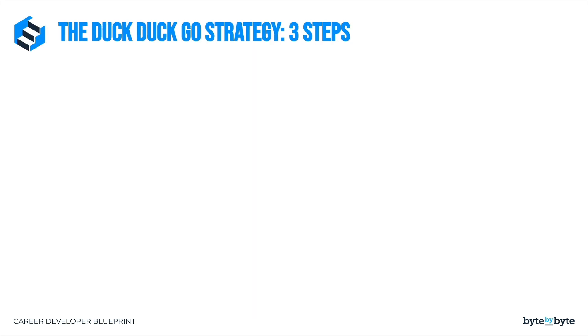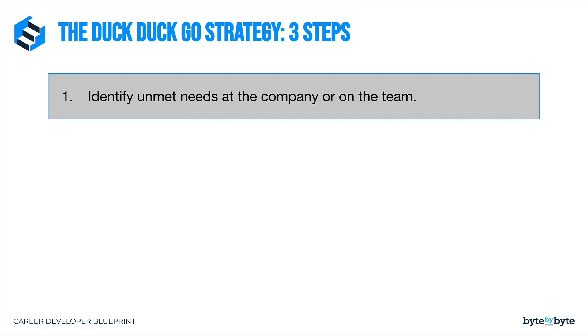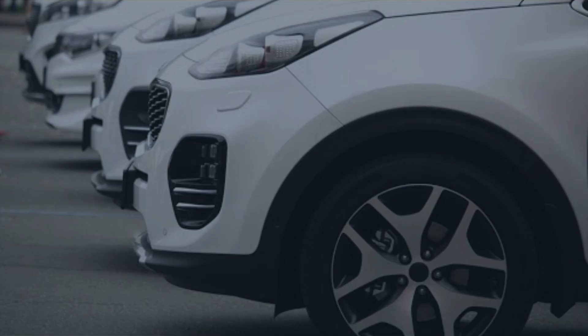Here's what the strategy looks like in three steps. Number one: we have to identify unmet needs at our company or on our team. At every company, at every stage, there are hundreds if not thousands of unmet needs. If this is the first time you've thought about finding unmet needs, you might immediately say, I have no idea what those unmet needs are. But I promise you that your company has unmet needs that you'll be able to start spotting — it just takes some work. This is really an example of what's called the Baader-Meinhof effect, or more commonly the frequency illusion.